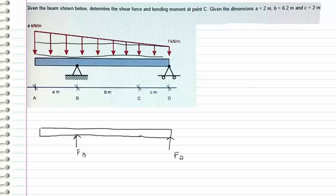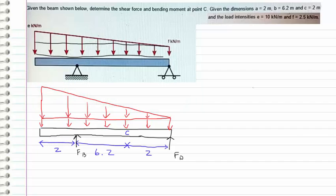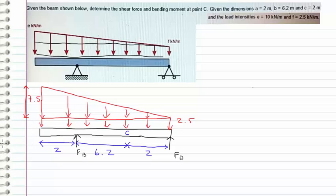We'll call the reaction from that support force B, and this will be force D. Then we've got this distributed load, which I'm going to break up into a rectangle and a triangle because those shapes will make it easier to work with. So up above we've got this rectangle here. Now let's add our relevant lengths of two meters. Overall, this height here is given as 10 kilonewtons per meter. Since we have this rectangle on the bottom that's 2.5 kilonewtons per meter forming the base, this height of the triangle is only 7.5.